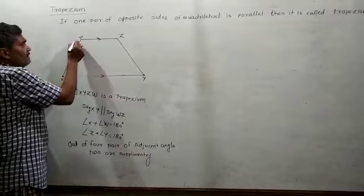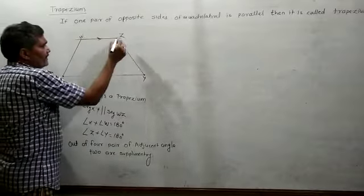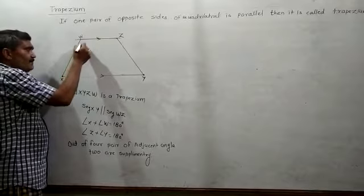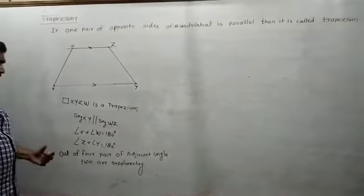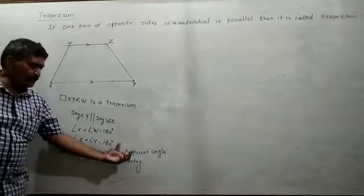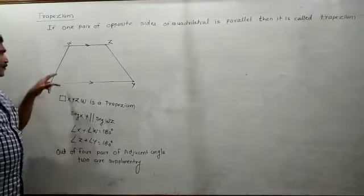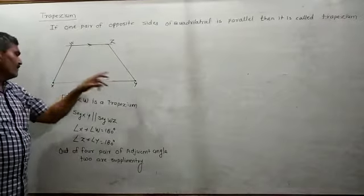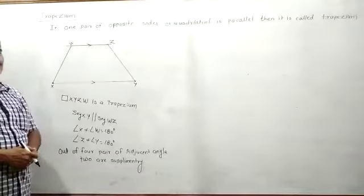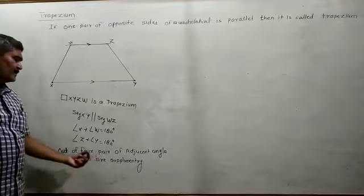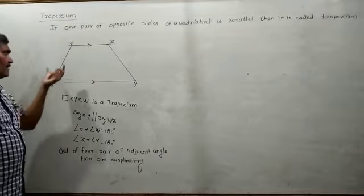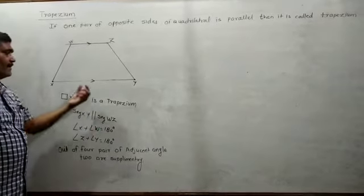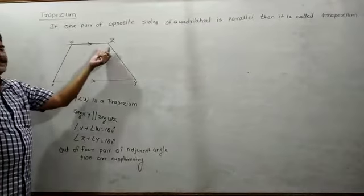If this line is parallel to this line, and this line is parallel to this line, then this one is the transversal. These are the interior angles. Out of the four pairs of adjacent angles — XW, WZ, ZY, and YX — two pairs are supplementary. That means angle X plus angle W is equal to 180 degrees, and angle Y plus angle Z is equal to 180 degrees.